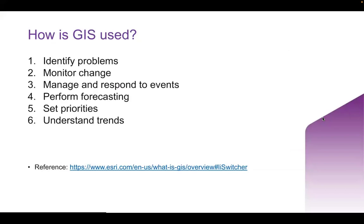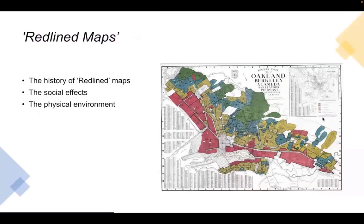So how exactly is GIS used? ESRI summarises six key uses: to identify problems, monitor change, manage and respond to events, perform forecasting, set priorities, and to understand trends. This provides a really useful set of uses, especially related to crime data. One example related to identifying problems that addresses them all was shown on the ESRI website — they showed how GIS addresses the inequality of urban renewal, and this introduces us to the term redlined maps.